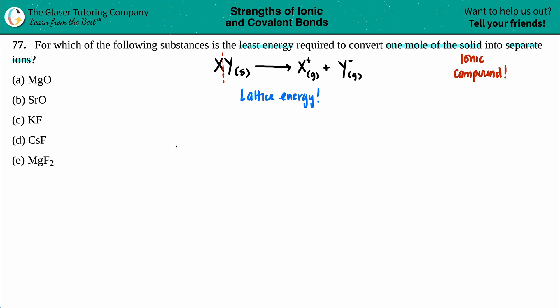So MgO - that's a solid, the ionic compound. We've got SrO, we've got KF, CsF, and then last but not least MgF2. Now all of these, since we're dealing with lattice energy, are going to break their ionic bond between the two atoms - the metal and the non-metal.